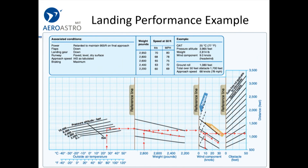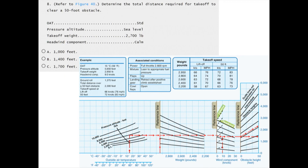Landing performance uses a pretty similar kind of chart. They give you the worked example and you come up with a little over 1,000 feet of ground roll and 1,700 feet to clear a 50-foot obstacle.